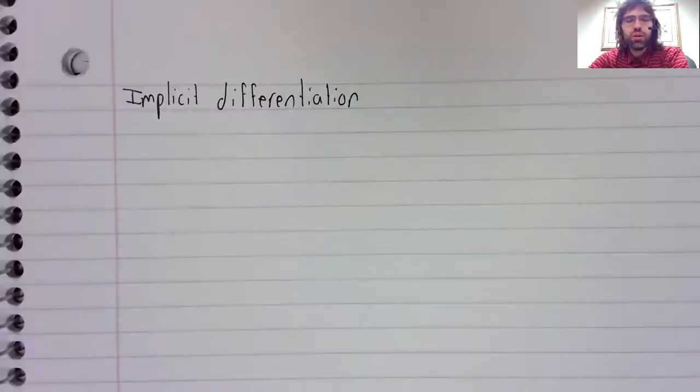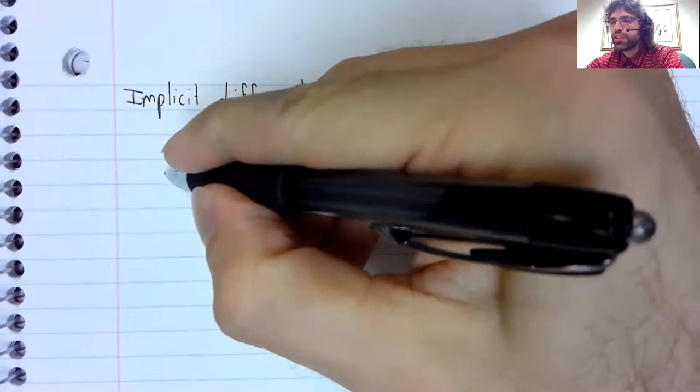In a previous video, I said that if you have an implicit equation, you can still find the derivative dy/dx if you pretend that y is a function of x. Let's try to make that cryptic statement less cryptic with some examples. This process is called implicit differentiation.